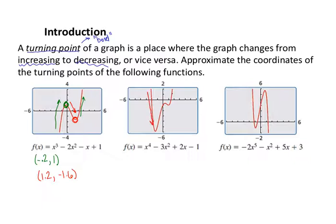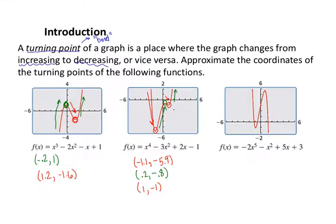For the second graph, we start off decreasing and reach the first turning point, which looks like negative 1.1, negative 5.9 — almost negative 6. The graph then increases until it reaches a turning point at about 0.2 and negative 0.8. Then the graph decreases briefly to what looks like the point 1, negative 1, and after that turning point the graph is increasing. We don't see any more turns. So those three turning points happened in our fourth-degree polynomial — that's the most we could see, three turns in a fourth degree.